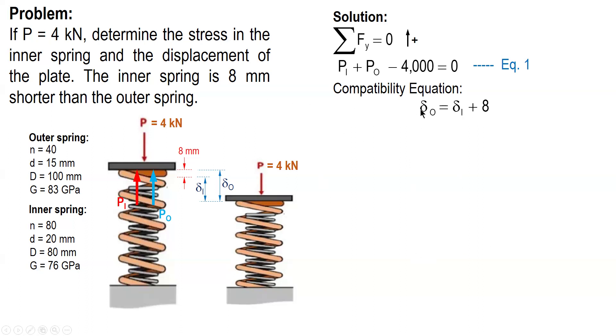After this, we replace delta with the expression for delta, which is 64 P R cubed N over G times D raised to 4. O is outer, I is inner. And R is mean radius, for the outer given mean diameter 100, so therefore the mean radius here is 50. And number of turns 40, G, 83 times 1,000. From gigapascal, convert to megapascal, multiply the value by 1,000. And then, diameter of the wire, 15.